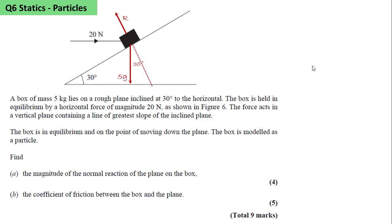The box is in equilibrium and on the point of moving down the plane. So this tells us that the friction, limiting friction μR, is acting up the plane. And we're asked to find the magnitude of the normal reaction and the coefficient of friction.